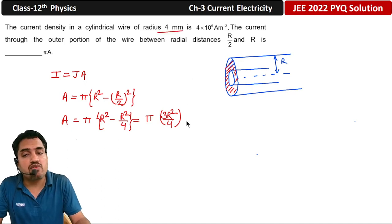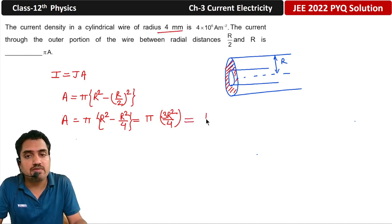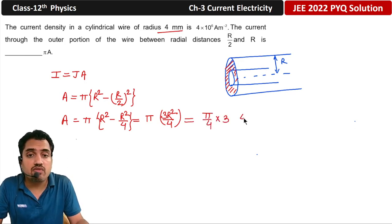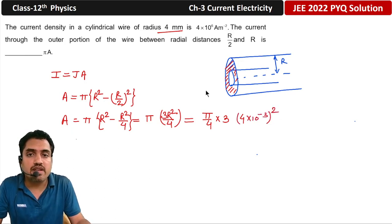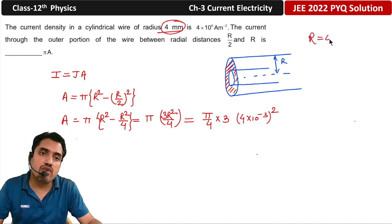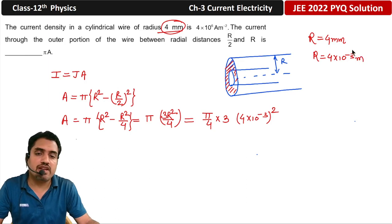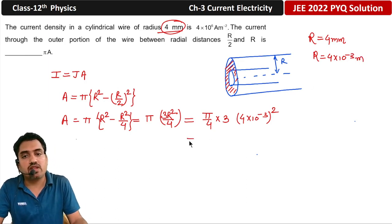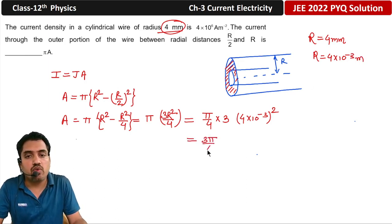Now R is 4 mm, which we convert to meters: R = 4×10⁻³ m. So R² = 16×10⁻⁶ m². Substituting, the area becomes 3π/4 × 16×10⁻⁶ meter squared.